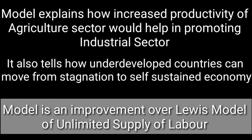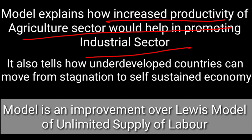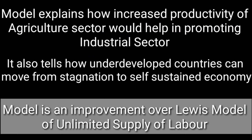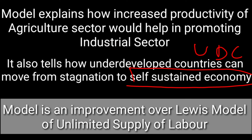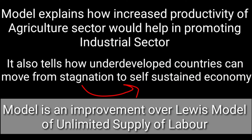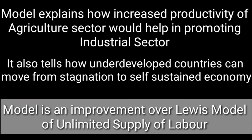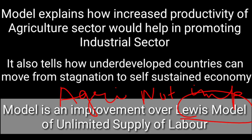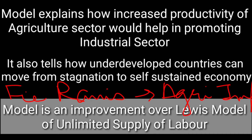The model explains how increased productivity of the agriculture sector would help in promoting the industrial sector. It also tells us how underdeveloped economies can move from the stage of stagnation to a self-sustained economy. It is also called an improvement over Lewis' model of unlimited supply of labour. The only difference between both models is that Lewis didn't pay attention to the agriculture sector, whereas the Fei-Ranis model says the agriculture sector is equally important.